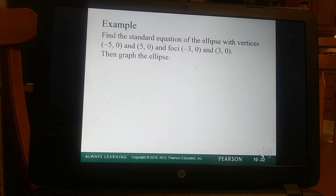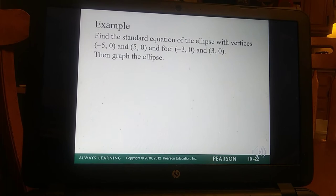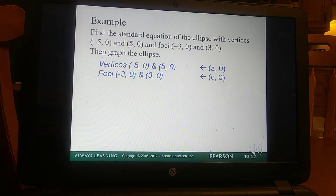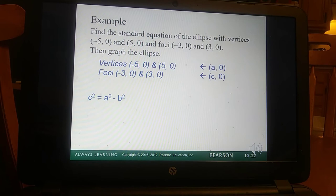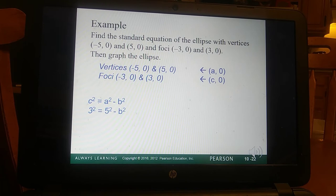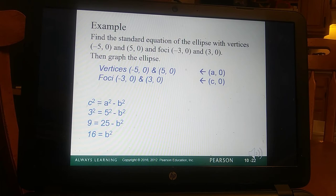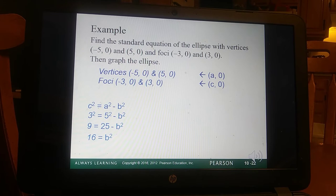So we're going to find the standard equation of the ellipse. We're given vertices and foci. So be careful, you're going to be given different pieces depending on the problem. So if we're given vertices and foci, and we know that the standard equation requires an A and B, and all we're given is an A and C, we obviously need to find B. So we're going to use that equation, we're going to plug in our C squared. So remember, C is represented by the foci, so that's going to be 3 squared equals 5 squared minus B squared. So once we do that, and we solve for B, we get B squared is equal to 16. So that means that B equals 4.